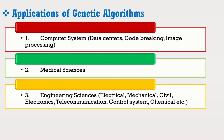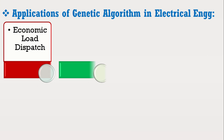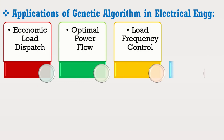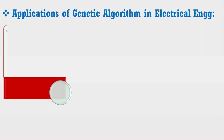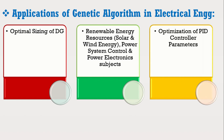In electrical engineering, genetic algorithms can be applied to topics such as economic load dispatch, optimal power flow, load frequency control, automatic generation control, optimal sizing of DG, renewable energy resources such as solar and wind, power system control, and power electronics. In short, genetic algorithms can be used to optimize the parameters of a PID controller. Therefore, wherever a PID controller is used, genetic algorithms can also be applied to optimize its parameters, highlighting their wide range of applications.